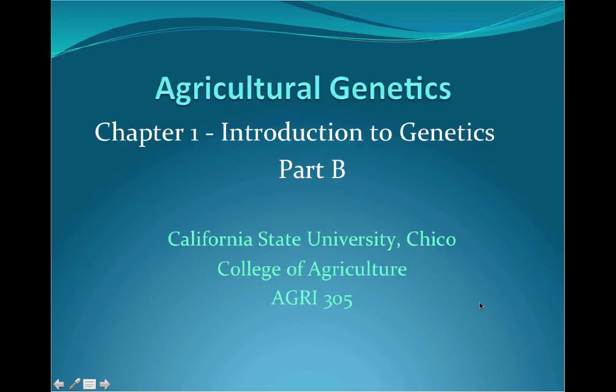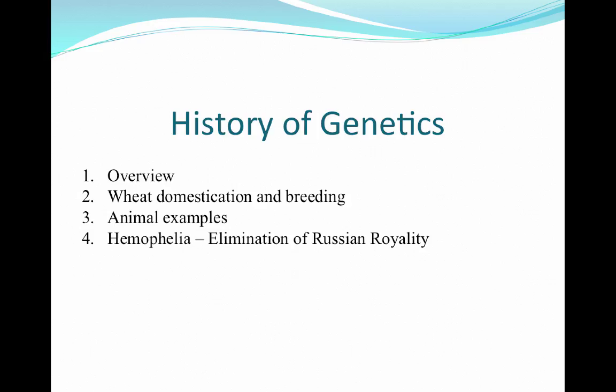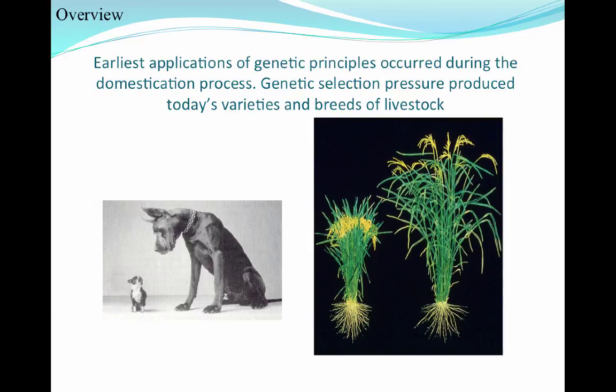This is chapter one part B of the Pierce text, and we're going to take a closer look at the history of genetics, focusing on wheat domestication and breeding, a few examples of animal genetics, and then a really good case study of transmission genetics: hemophilia.